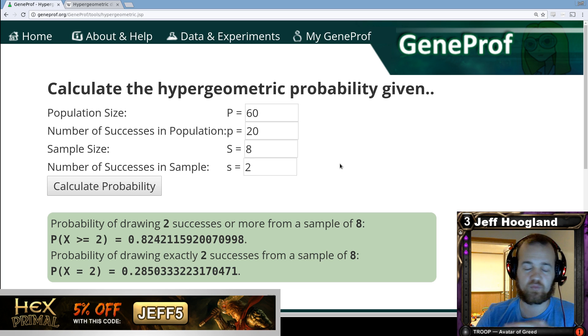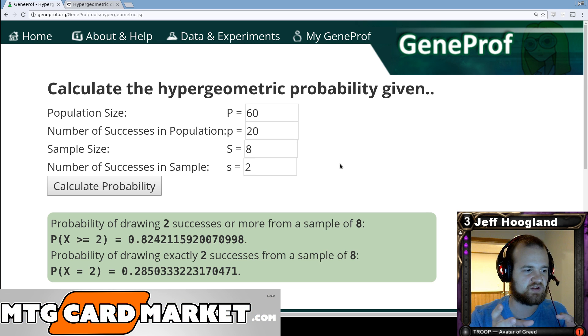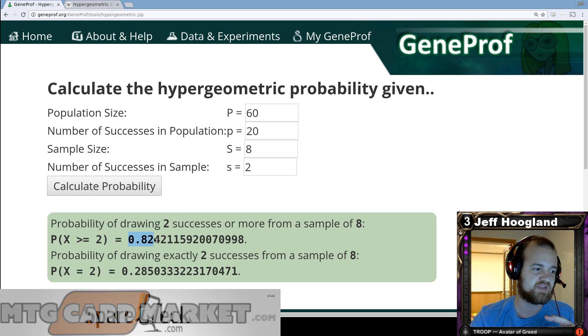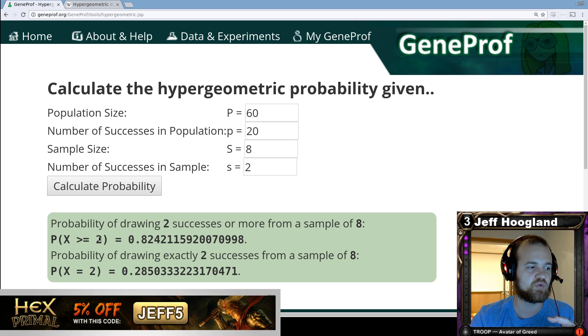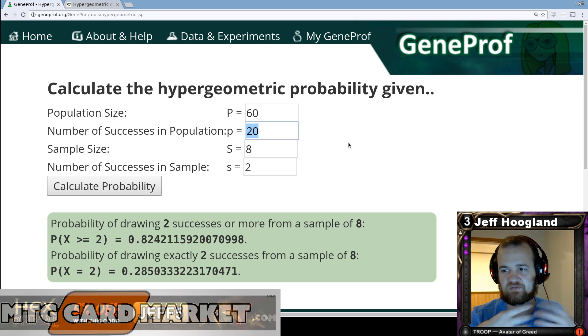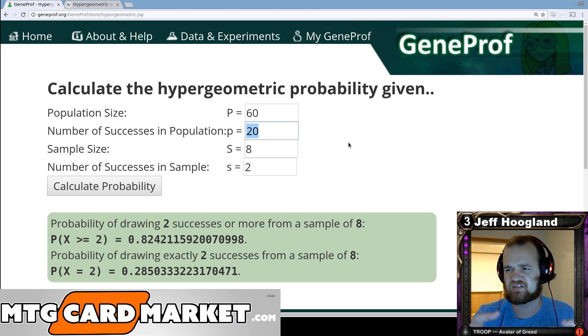Now, the one thing that we're kind of using this in a generic sense in that it's close enough. The one thing that this doesn't account for is that this 82% number here also includes hands that aren't keepable. For instance, it includes hands where all eight of these cards could be resources. And obviously, you're not going to keep a hand like that or hands that have seven resources. But those numbers are small enough that it's like a negligible difference, it's good enough for government work as we used to say.